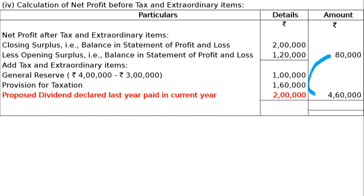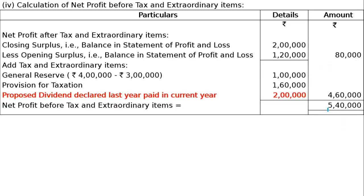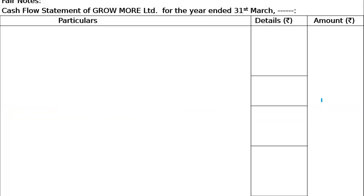So 80,000 plus 4,00,000 gives us total 5,40,000. Wait - for proposed dividend: current year 4 lakh, last year 2 lakh declared and to be paid. Adding these gives us net profit before tax and extraordinary items as 5,04,000. Now, cash flow statement of Grow More Limited for the year ended 31st March of the current year.